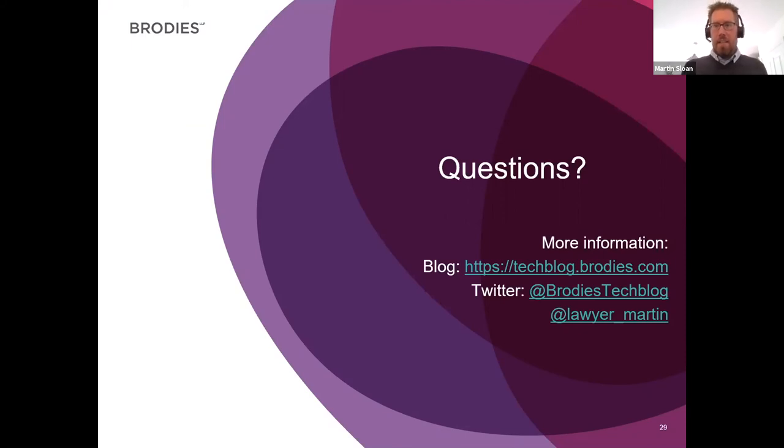Thank you — it was a very rich talk, very interesting to see how all these issues become relevant when operating in a digital environment. We already have a number of interesting questions from the audience. One question relates to ownership of intellectual property — something you also mentioned while exploring risk mitigation. If data from multiple sources is drawn together and a relationship established, who actually owns that IP, particularly where the relationship might permit substantial financial gain?